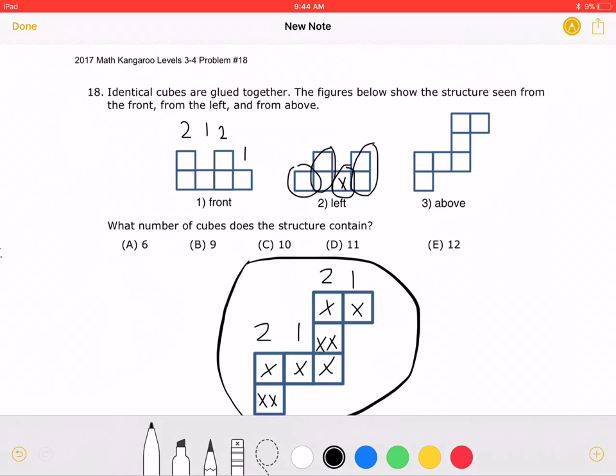And remember that if there's two cubes on the same column as the one cube, then we'll see the two cubes instead of the one cube, because that is taller.